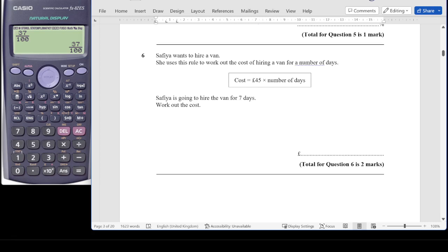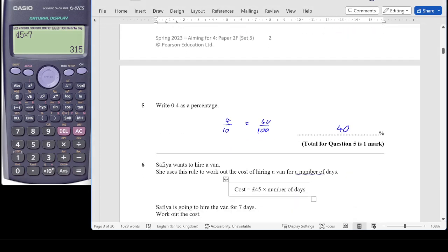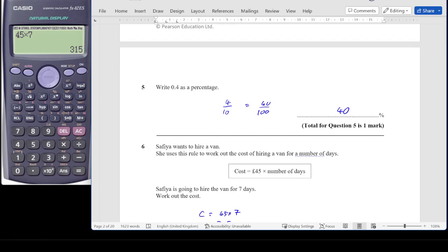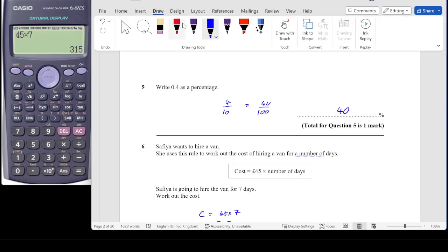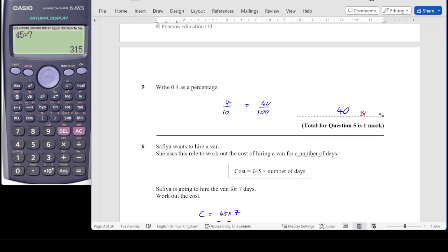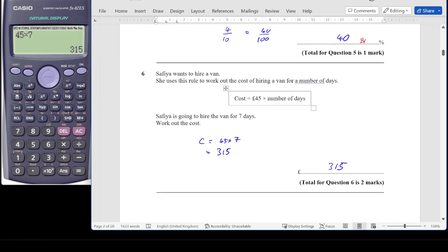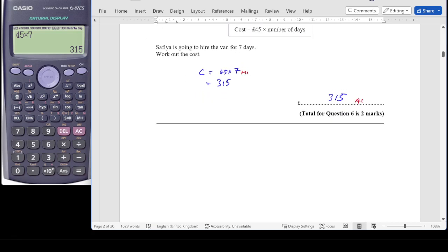Question 6, Safiya wants to hire a van. She uses this rule to calculate the cost of hiring a van for a number of days. Cost equals £45 times by the number of days. Safiya is going to hire the van for 7 days, work out the cost. So the cost is going to be equal to 45 times by 7, which gives us £315. For question 5, the mark is B1 correct answer only. And then for question 6, we're looking for one method mark for showing 45 multiplied by 7, so M1, and then A1 for 315.